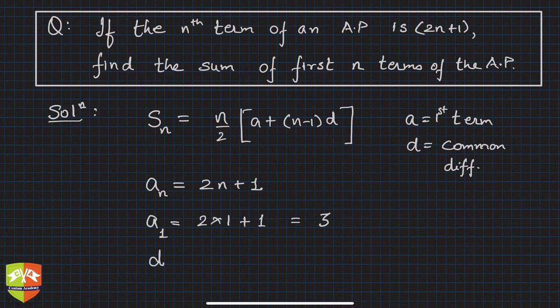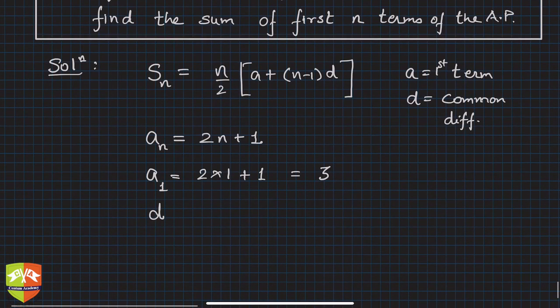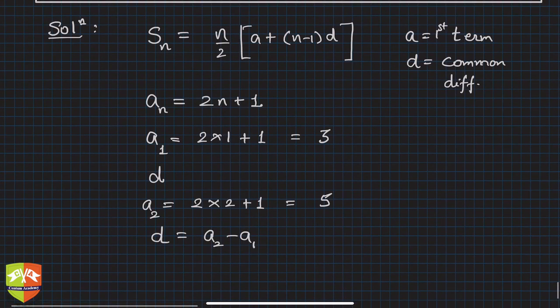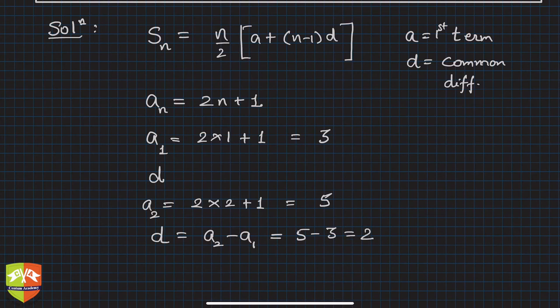And what is common difference d? For that if you find out a_2 it will be helpful. So let's find out a_2 first. a_2 is 2 into 2 plus 1 which is 5. So d will be the common difference, which is a_2 minus a_1, the difference of any two consecutive terms. So that means 5 minus 3 is 2.